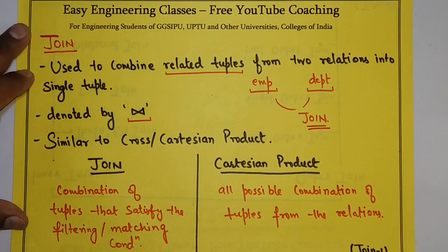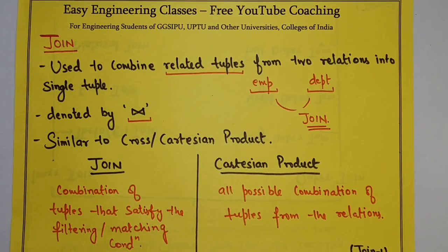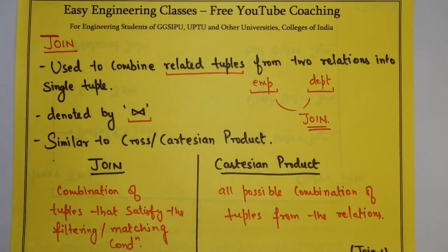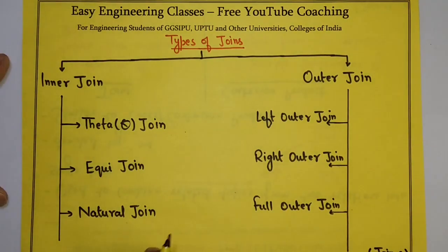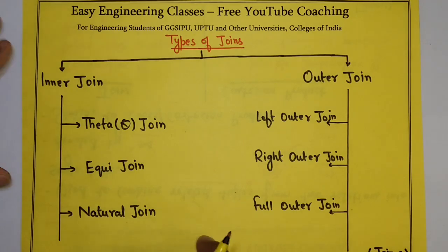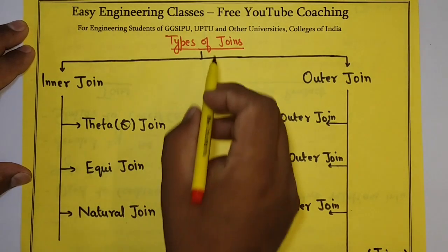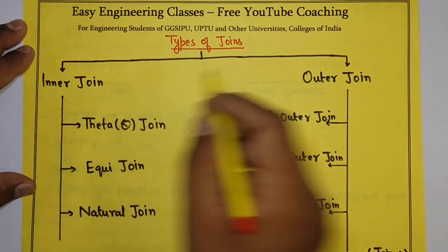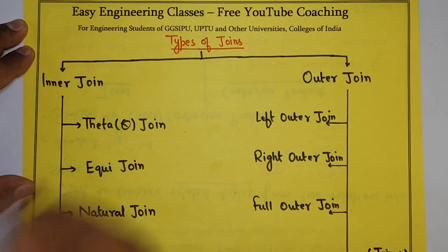It will be more clear when we see some examples on join. So join is used to combine related tuples from two relations into a single tuple. There are several different types of joins in relational algebra. Broadly, we can divide them into two different types: inner join and outer join.